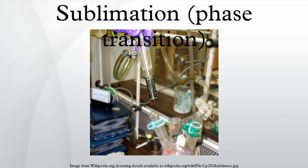Sublimation is a technique used by chemists to purify compounds. A solid is typically placed in a sublimation apparatus and heated under vacuum. Under this reduced pressure, the solid volatilizes and condenses as a purified compound on a cooled surface, leaving a non-volatile residue of impurities behind. Once heating ceases and the vacuum is removed, the purified compound may be collected from the cooling surface. For even higher purification efficiencies, a temperature gradient is applied, which also allows for the separation of different fractions.